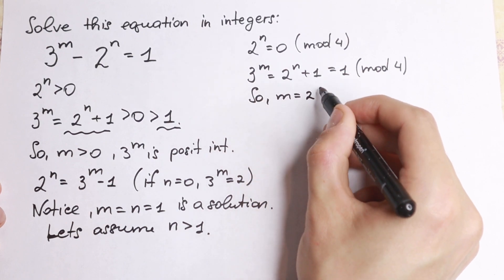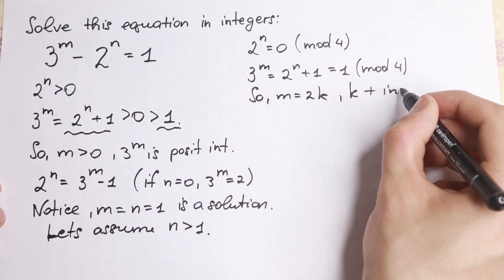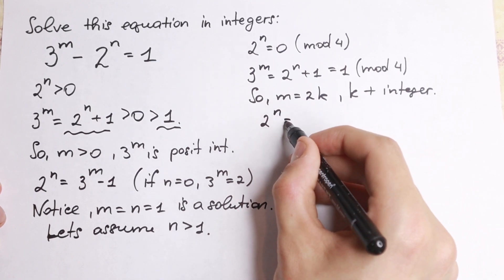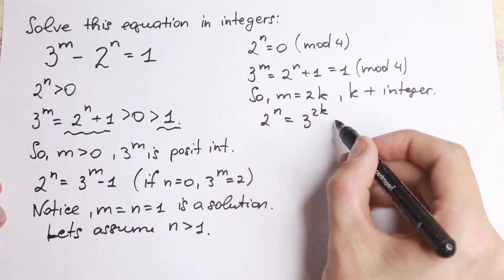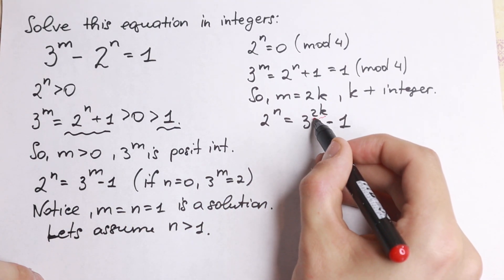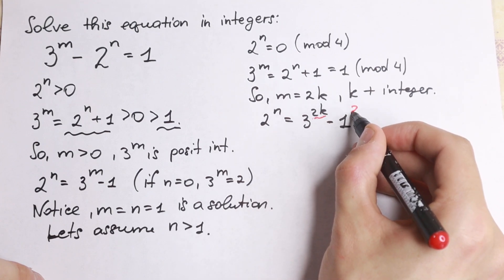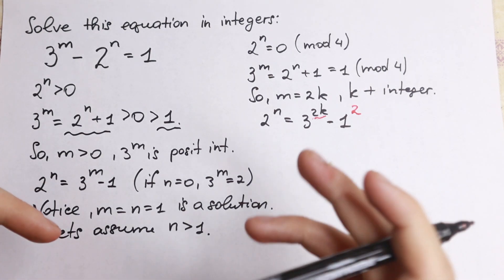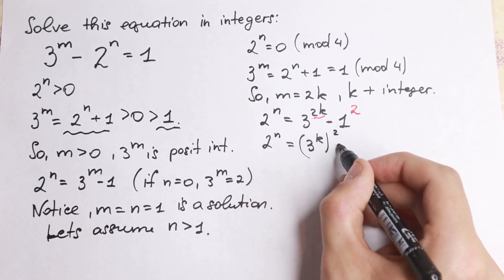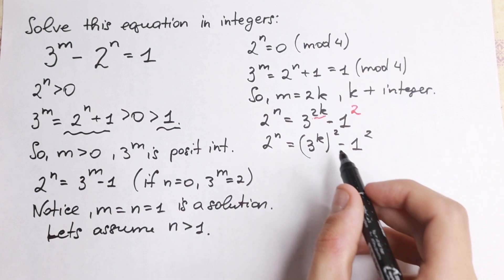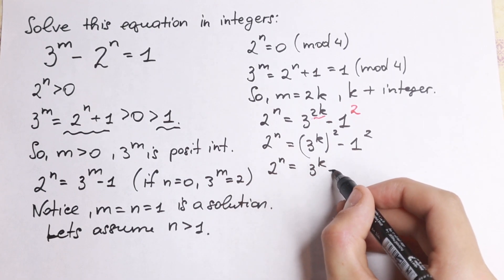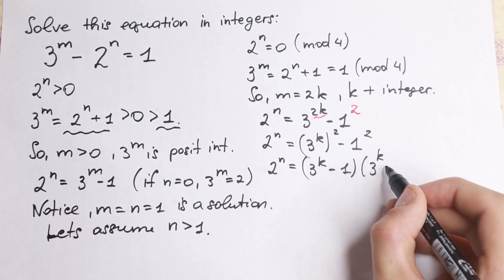Let m equal to 2k, where k is a positive integer. Then we will have 2 to the power n equal to 3 to the power 2k minus 1. This substitution is useful because we have a perfect square, and we can write this as a difference of squares. So 2 to the power n equals 3 to the power k squared minus 1 squared.